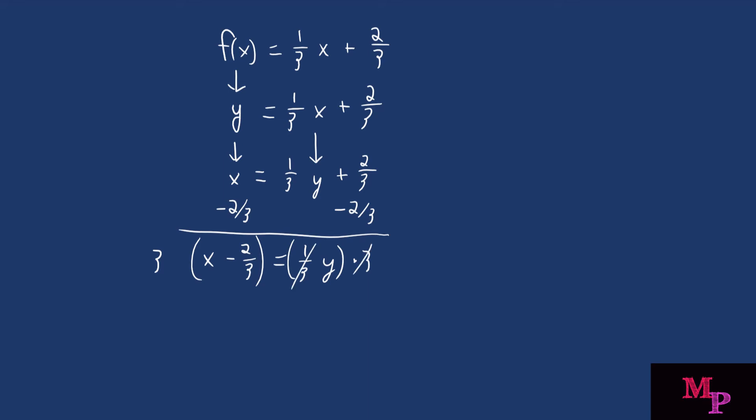Three times x is three x. Three times negative two is negative six divided by three is negative two. And that's going to be equal to y.